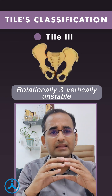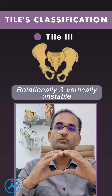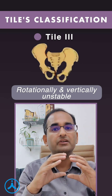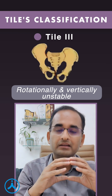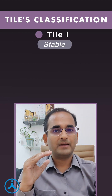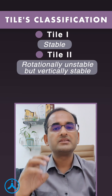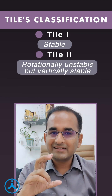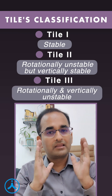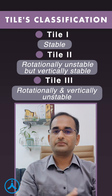Tile 3 is when there is both rotational instability and vertical instability. To summarize: Tile 1 is a stable pelvis with some fracture but the ring is stable; Tile 2 is rotational instability with no vertical instability; and Tile 3 is both vertical and rotational instability. This is Tile's classification.